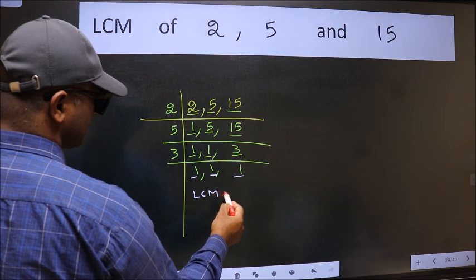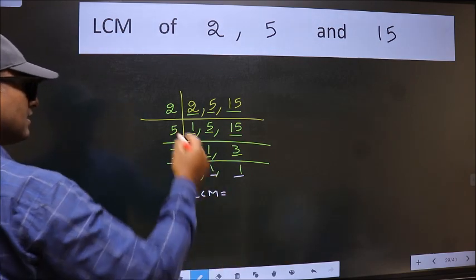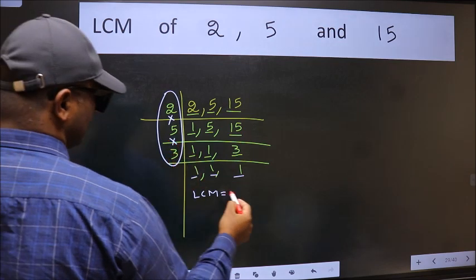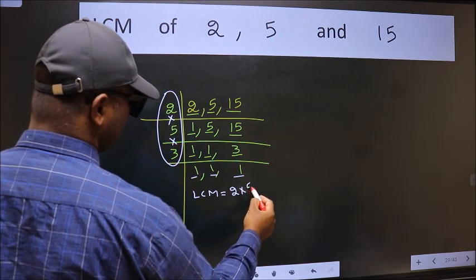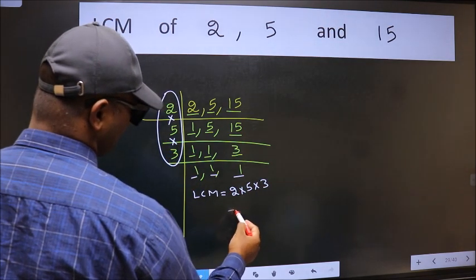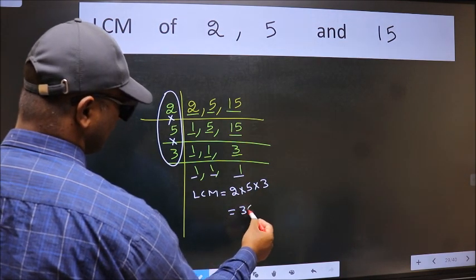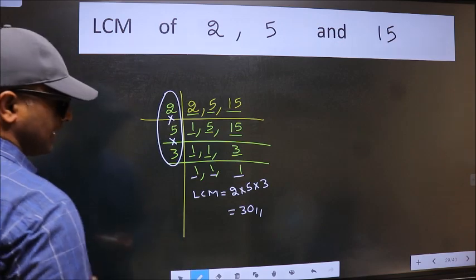So our LCM is the product of these numbers, that is 2 into 5 into 3. When we multiply these numbers we get 30. 30 is our LCM.